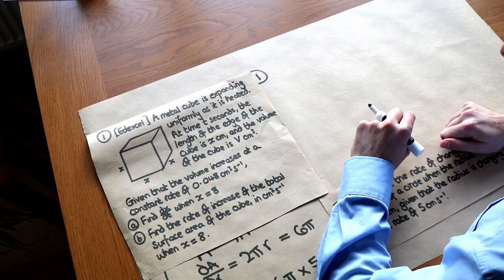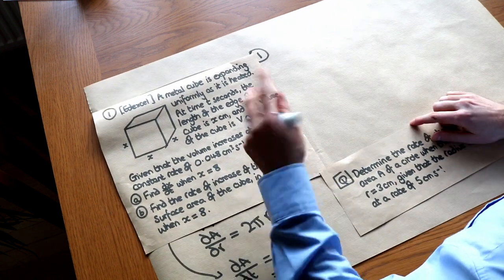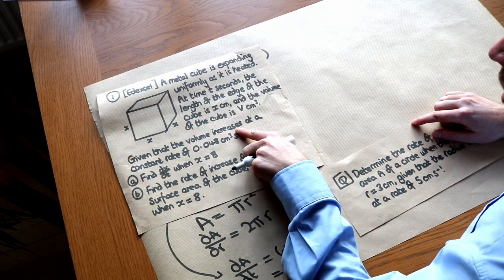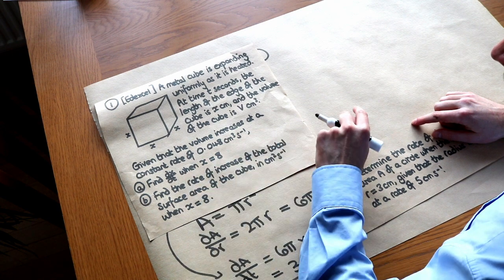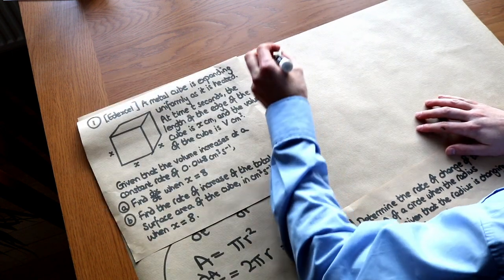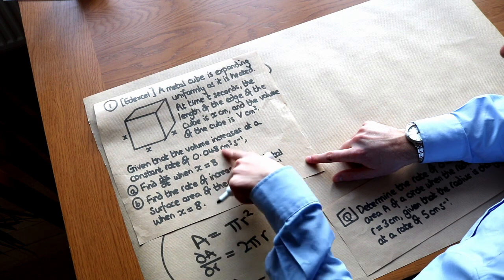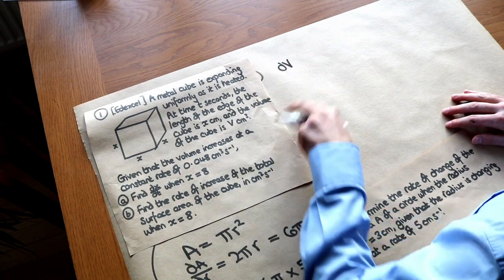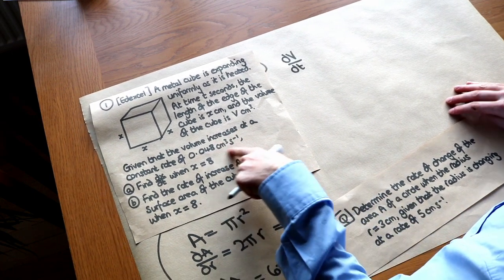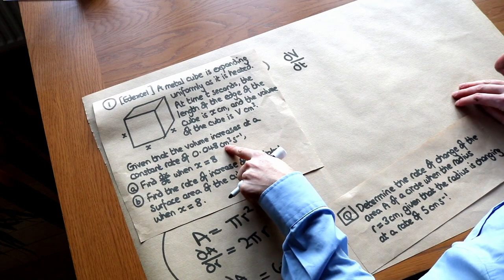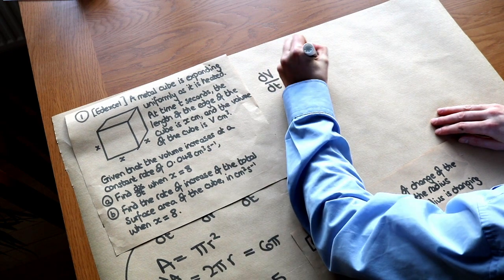A metal cube is expanding uniformly as it is heated. At time t seconds, the length of the edge of the cube is x and the volume is v. Given that the volume increases at a constant rate of 0.048 centimeters cubed per second, find dx over dt when x is equal to 8. Let's write down what we know first. It tells us the volume increases at a rate of this. So that is dv, because the volume is v, over, well it's a rate, so it's always dt. This unit here gives us a clue to what we have, that's volume over time, dv over dt. So we're told that is equal to 0.048.